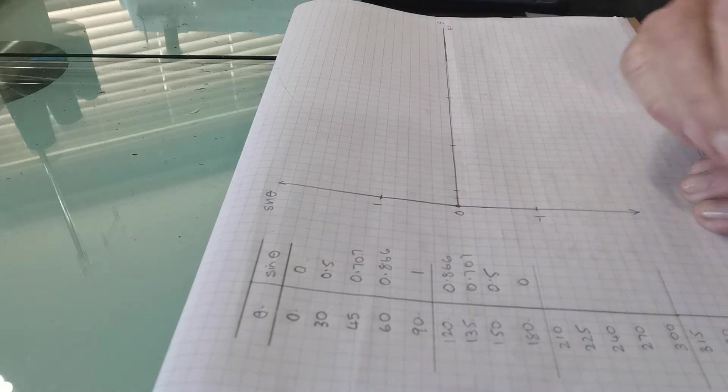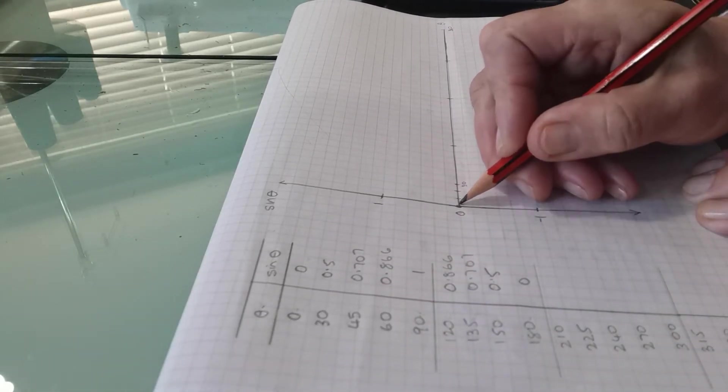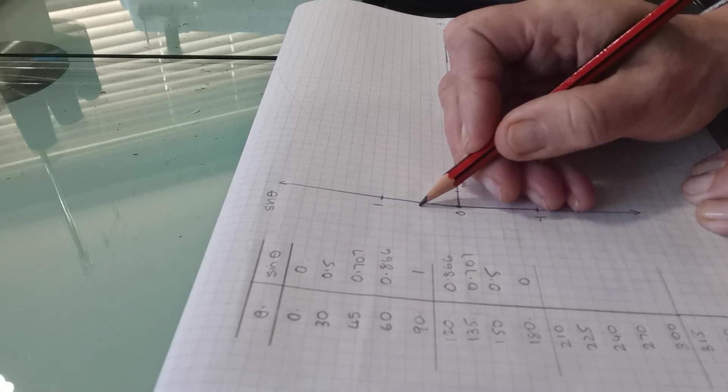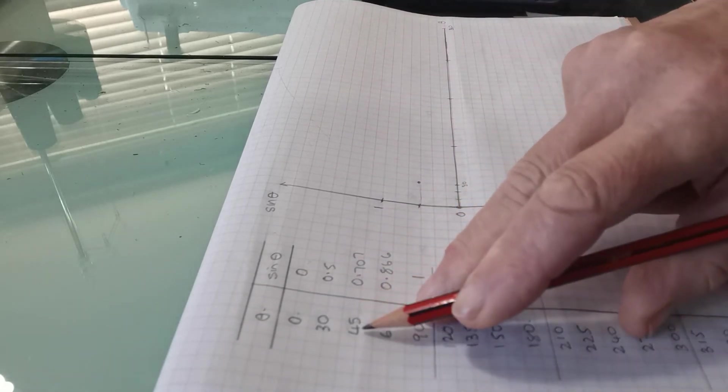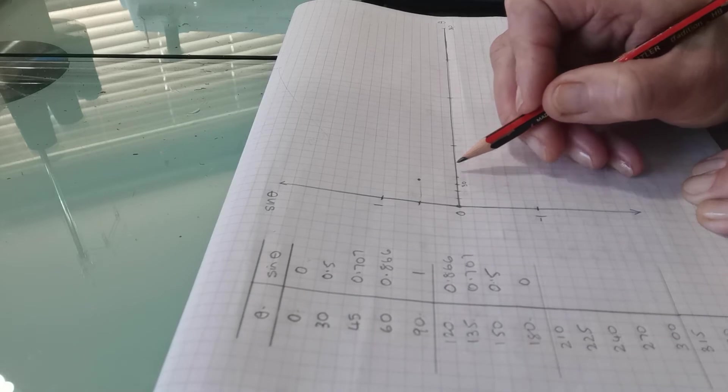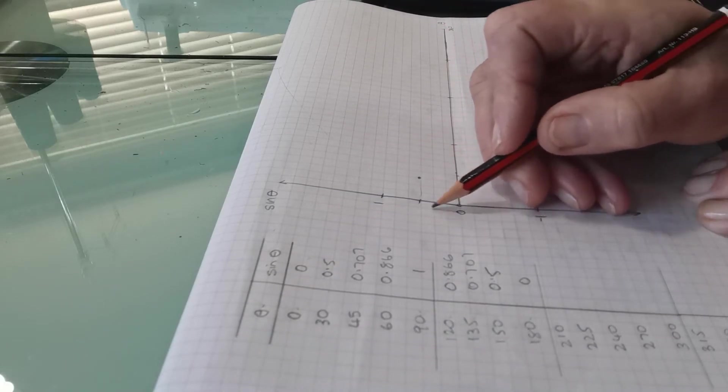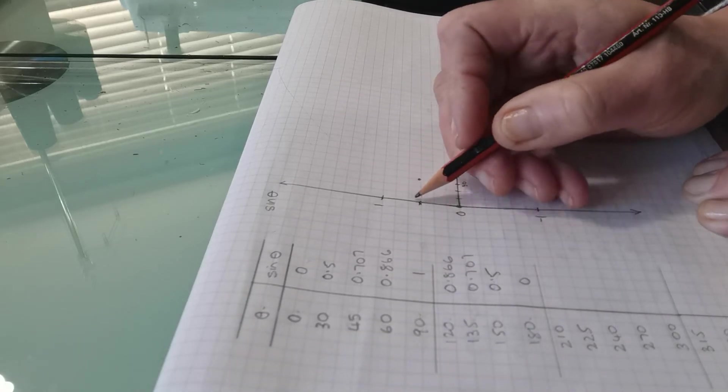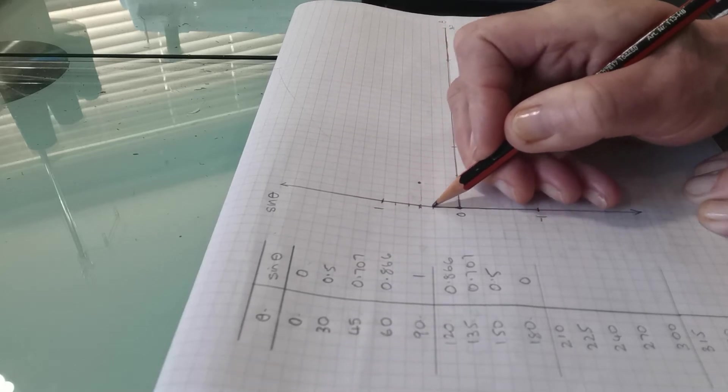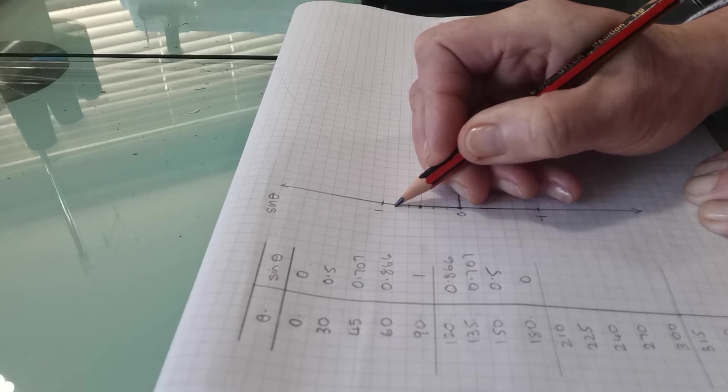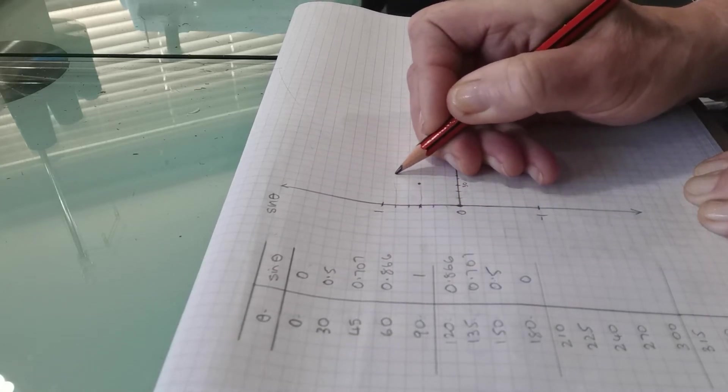So the first one is 0, 0 which is there. The next one is 30 so you need to find 30 here. 30 degrees is three small squares and it's 0.5. Well there's 0.5 and that's the next point. The next one is 45 degrees so that's 40 and 45 will be here and it's 0.707 so that's 0.5. This would be probably going up in thirds and going down in thirds. It would be about here so 0.707 for 45 is here.